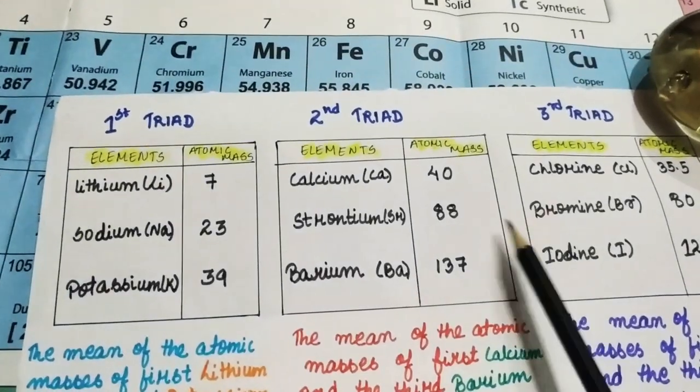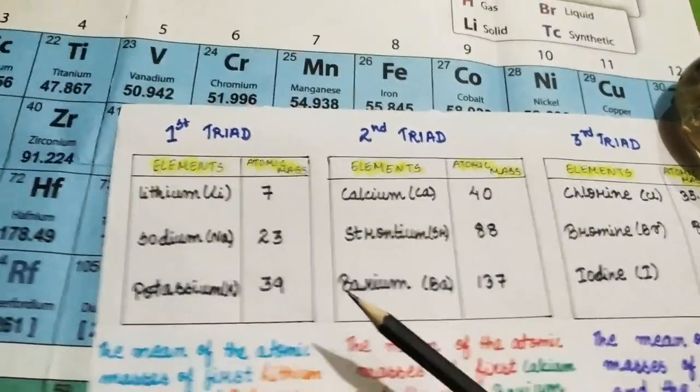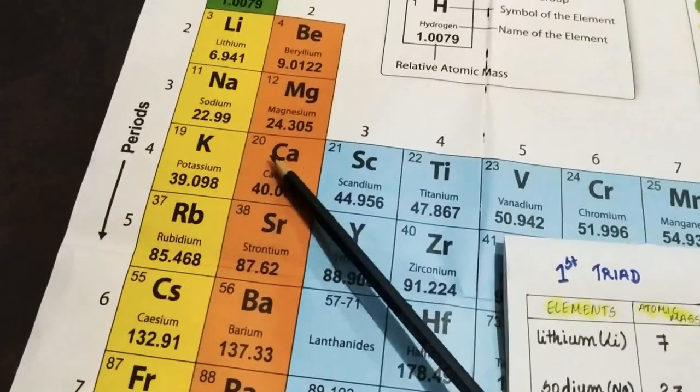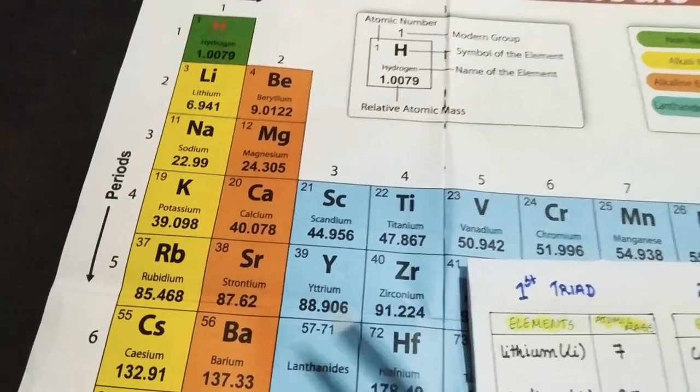His second triad includes calcium, strontium, barium. In the modern periodic table, we have calcium, strontium, barium in the alkaline earth metals.